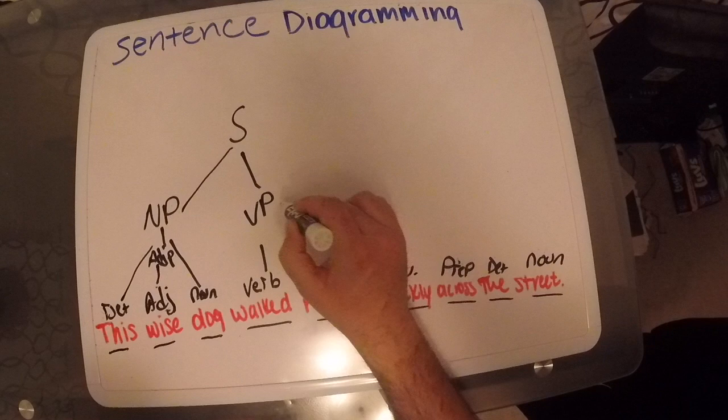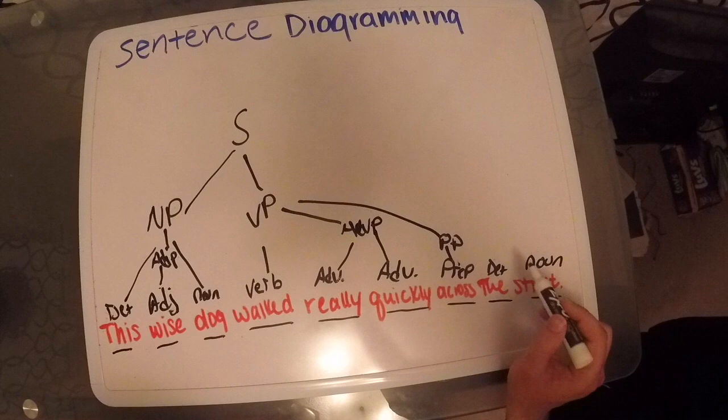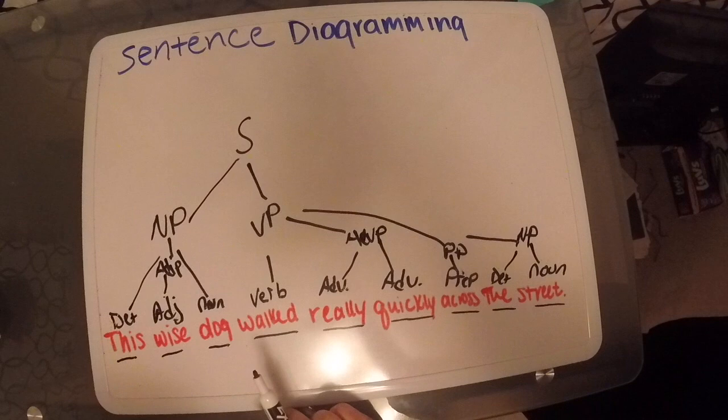We have our preposition. That connects back to our verb phrase. And finally, we have our noun phrase, which connects to our prepositional phrase. This is our sentence tree or our sentence diagram. Thank you.